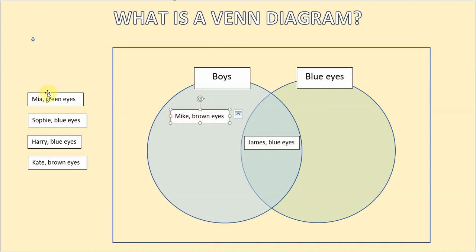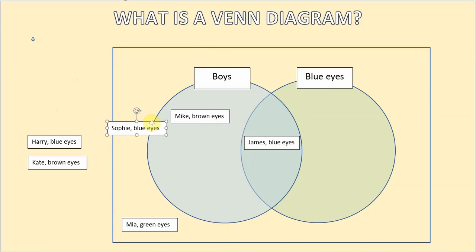The next child is a girl called Mia who has green eyes so Mia is not a boy and she doesn't have blue eyes so Mia goes in the universal set outside of the other two sets. Sophie is another girl with blue eyes this time so Sophie she isn't a boy but she does have blue eyes so she goes in the blue eyes set but not in the intersection.